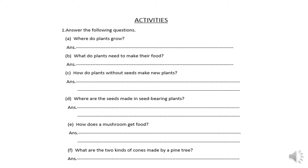Part E is: how does a mushroom get food? Mushrooms don't have green color, so there is no chlorophyll in them. They get their food from the humus in the soil. Humus is a mixture of dead leaves and small animals. So mushrooms get their food from the humus in the soil.